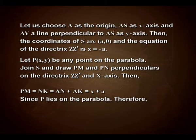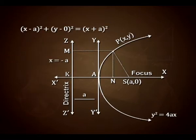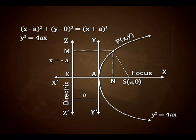Since P lies on the parabola, therefore SP = PM. On squaring both sides, SP² = PM², which gives (x − a)² + (y − 0)² = (x + a)². On simplification, this gives y² = 4ax. This is the equation of the parabola in its standard form.